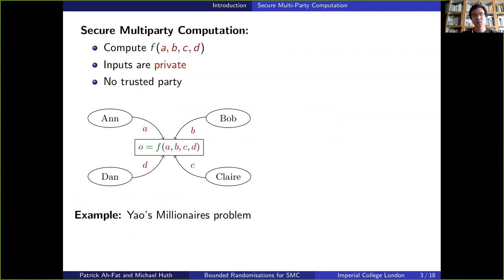So first of all, SMC, secure multi-party computation, is a domain of cryptography that enables several parties to compute a public function of their own private inputs, while keeping the input secret and without having to rely on any other trusted third party. A famous example of that is Yao's millionaire's problem, where two millionaires want to know who the richest of them is, without having to reveal their own wealth.